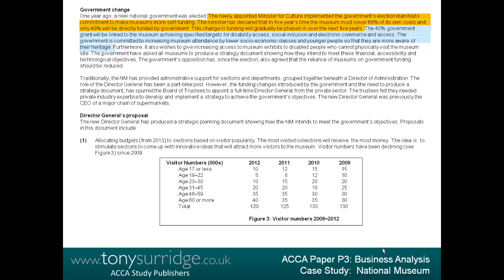Furthermore, the government also wishes to give increasing access to museum exhibits to disabled people who cannot physically visit the museum's site. The government has asked all museums to produce a strategy document showing how they intend to meet financial, accessibility, and technological objectives. The government's opposition has also agreed that the reliance of museums on government funding should be reduced. We could say that this is a social issue that needs to be addressed — so we colour it green.